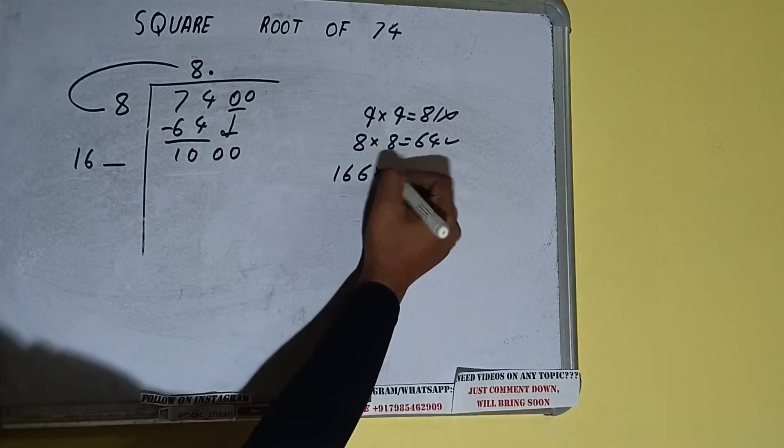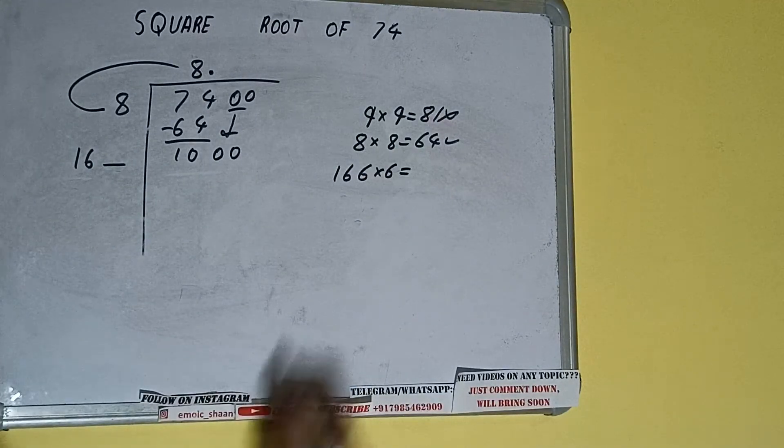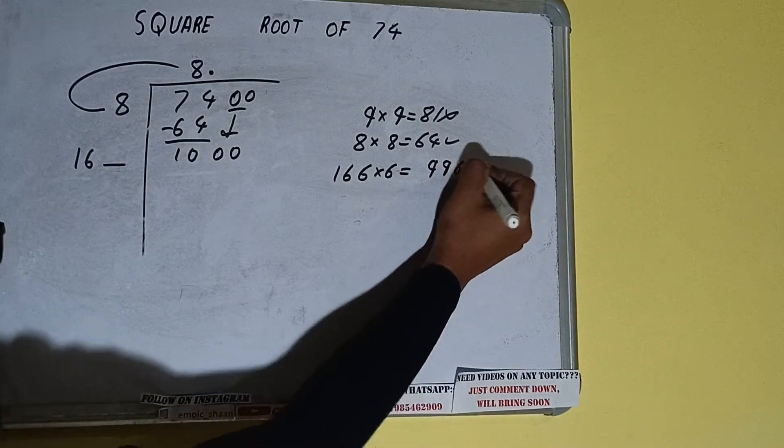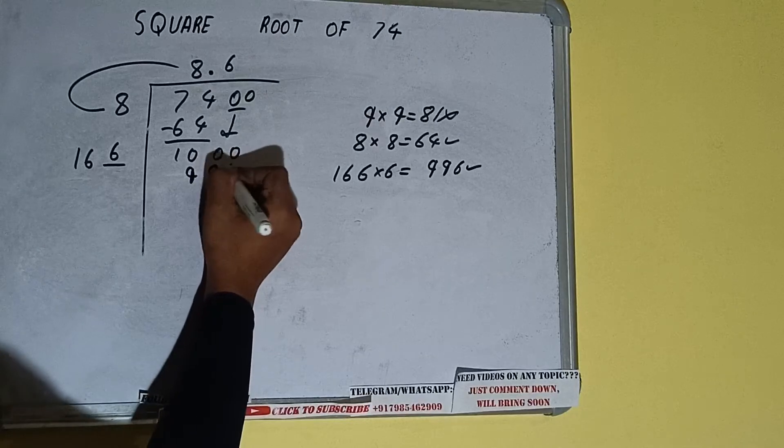1, 6, 6 into 6 we can try. And we will be having 9, 9, 6 which is good to take. So 6 here and 6 here. 9, 9, 6 subtract. 4 will be left.